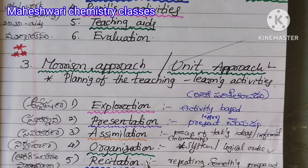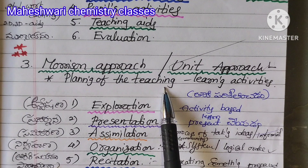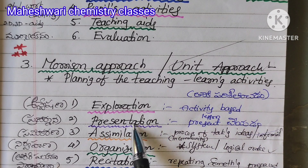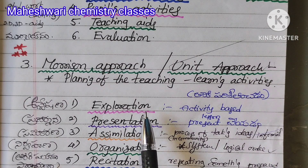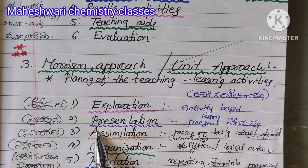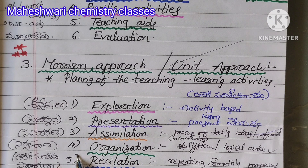Morrison's Approach, also known as the Unit Approach, has five steps. First is Exploration. Second is Presentation. Third is Assimilation. Fourth is Organization. Fifth is Recitation.